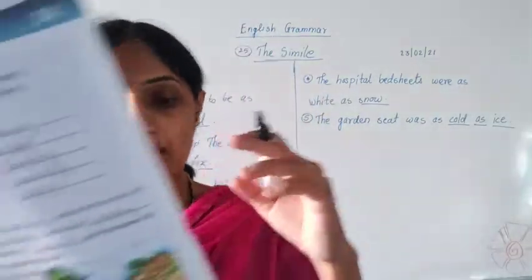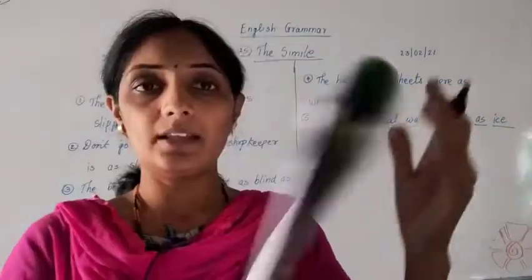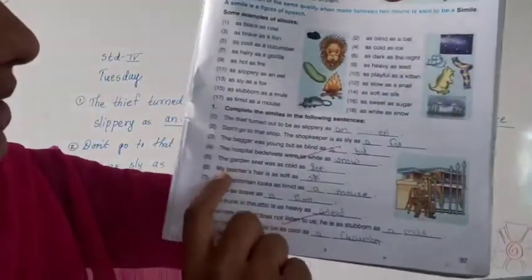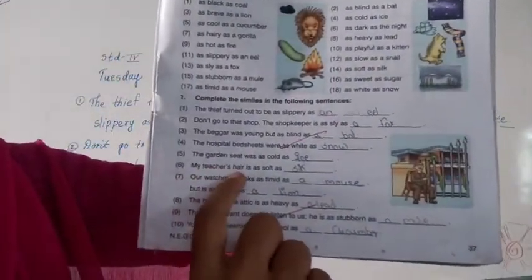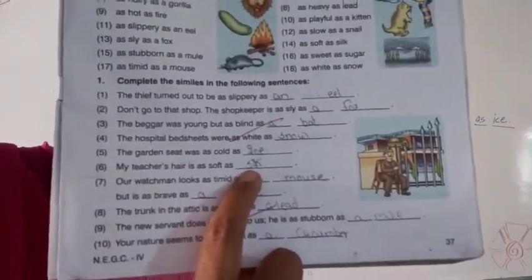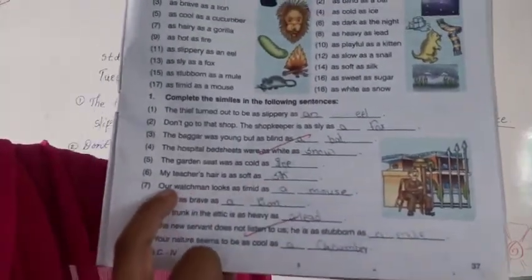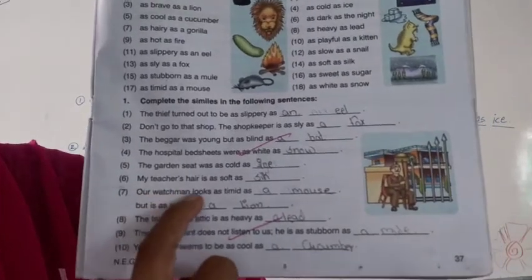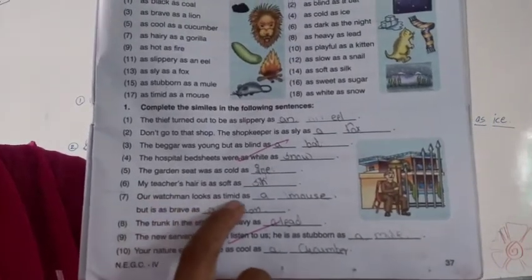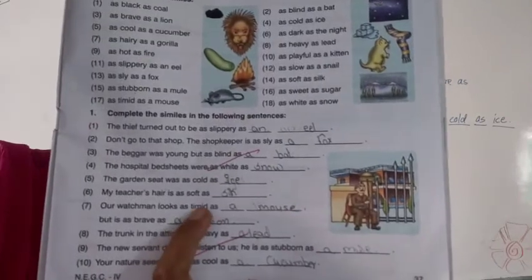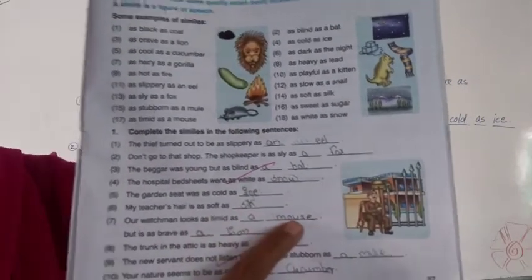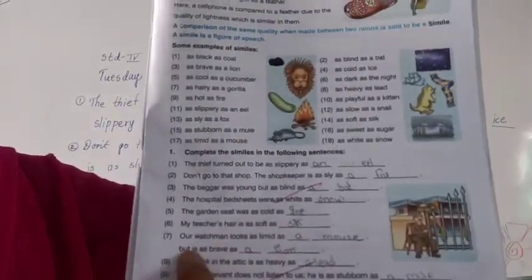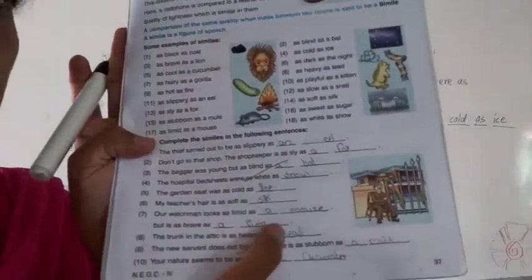Sixth one: my teacher's hair is as soft as silk. Seventh: our watchman looks as timid as a mouse — timid means small, like as small as a mouse — but he is as brave as a lion.